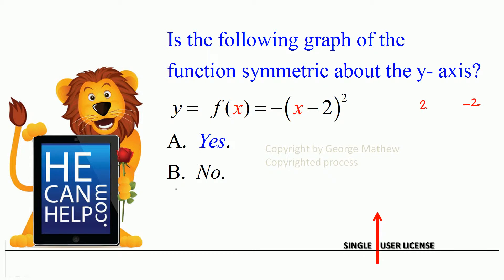When we have positive 2, what is x minus 2 the whole squared and negative of that? It will be negative of (2 minus 2) the whole squared. So it will be negative of (2 minus 2) is 0, the whole squared, and that is equal to 0.